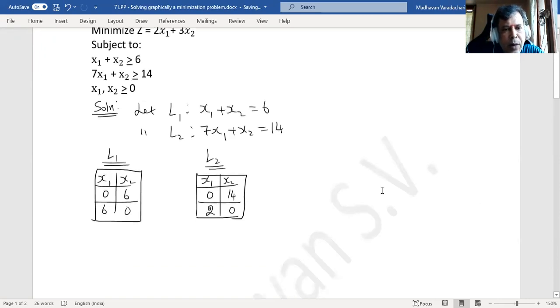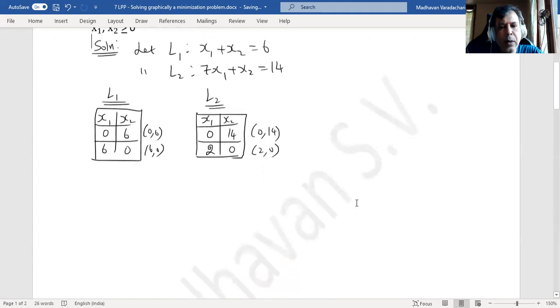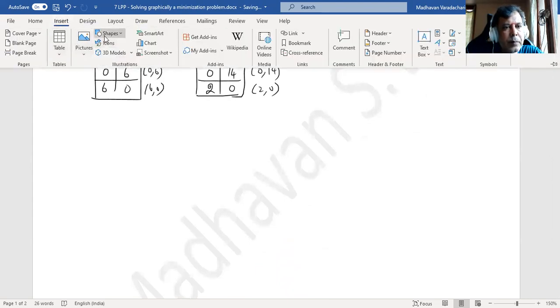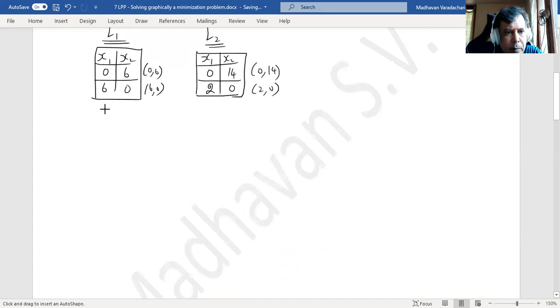So for L1 the coordinates are (0, 6) and (6, 0). L2 the coordinates are (0, 14) and (2, 0). Now let us draw the graph.